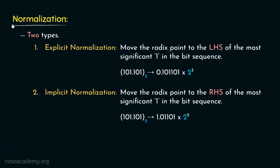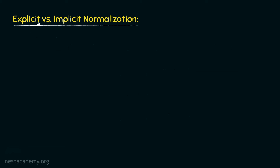Now in the previous session, while talking about normalization, we observed there are two types: the explicit normalization and the implicit normalization. In case of explicit normalization, we move the radix point to the left-hand side of the most significant one in the bit sequence, whereas in case of implicit normalization, we move the radix point to the right-hand side of the most significant one. Let me illustrate what difference this makes with a proper example.